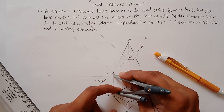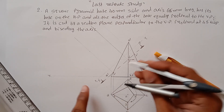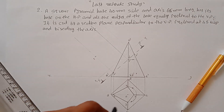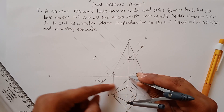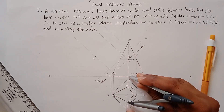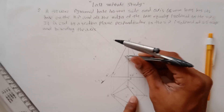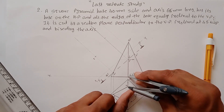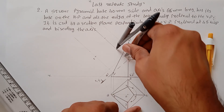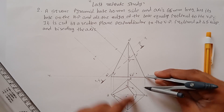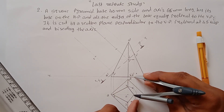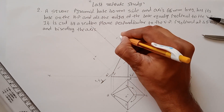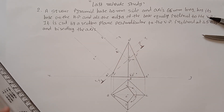From the XY line, measure the perpendicular distance of point 1 and transfer it from X1Y1 — this gives point 1 in the true shape. Measure the distance of point 2 from XY and transfer it from X1Y1 to get point 2. Similarly measure and transfer point 4 and point 3. You now have points 1, 2, 3, and 4. Join all of them.